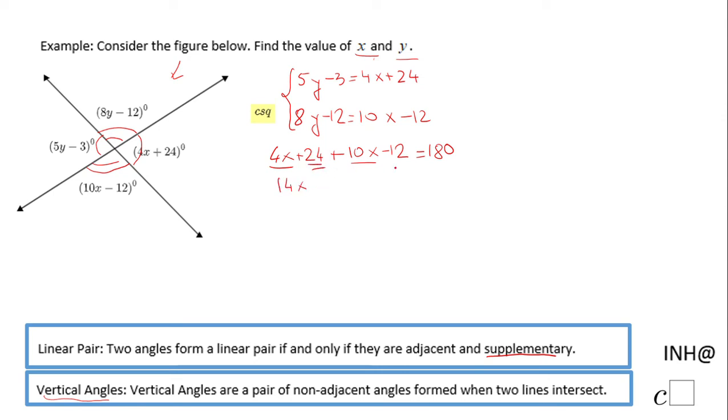Plus 24, but positive 24 minus 12 will be plus 12, equals 180. Subtract 12, so we have 14x equals 168. And the last step, divide by 14.